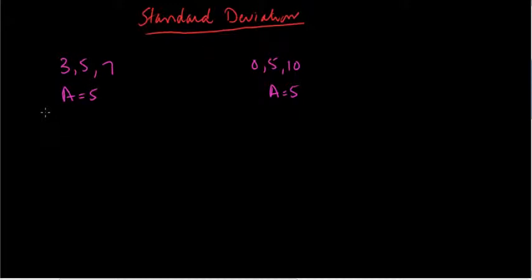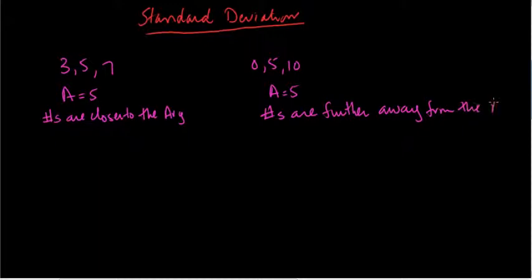Numbers are closer to the average compared to here where the numbers are further away from the average. In simple words, my average is 5 and you see 3 and 7 are closer to 5 compared to 0 and 10.